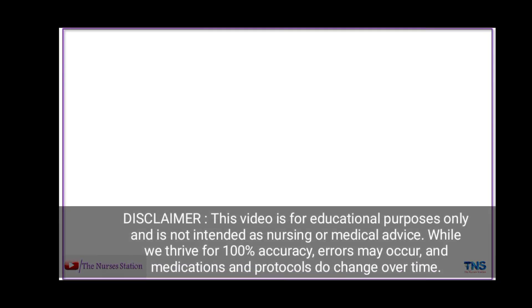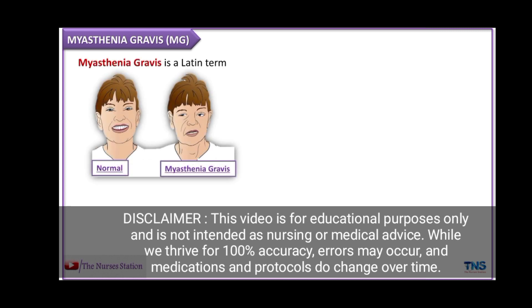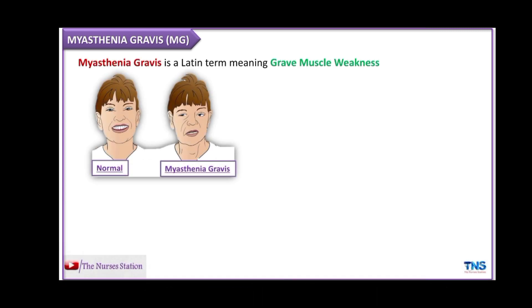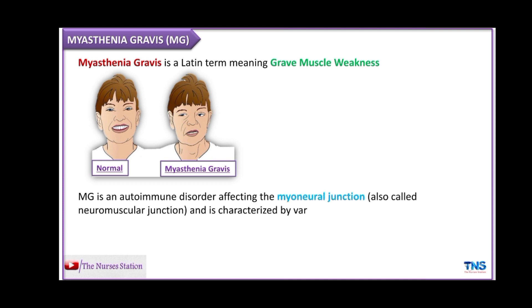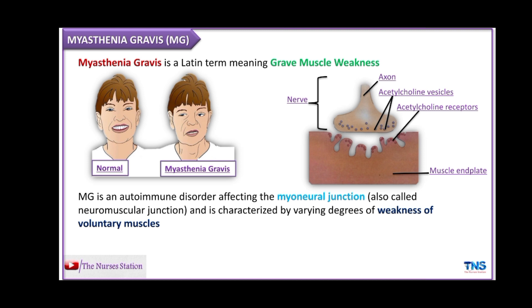In this video we will talk about myasthenia gravis. The term myasthenia gravis is a Latin term which means grave muscle weakness. It is an autoimmune disorder which affects the myoneural or neuromuscular junction and is characterized by varying degrees of weakness of the voluntary muscles. The myoneural junction is the chemical connection between the muscle end plate and the nerve terminal where chemical communication takes place between the nerve and the muscle.